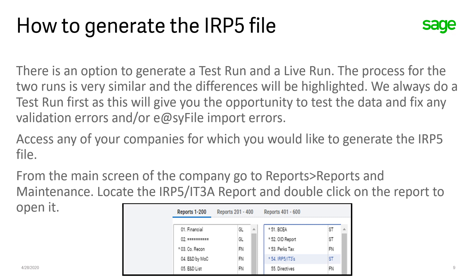Access any of your companies for which you would like to generate the IRP-5 file. From the main screen of the company, go to Reports, Reports and Maintenance. Locate the IRP-5 IT3A report and double-click on it to open it.